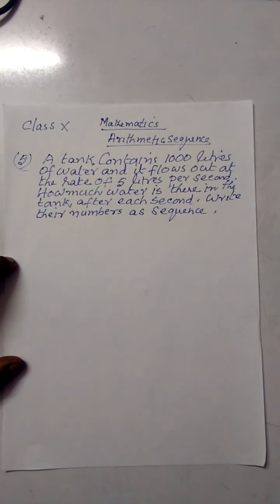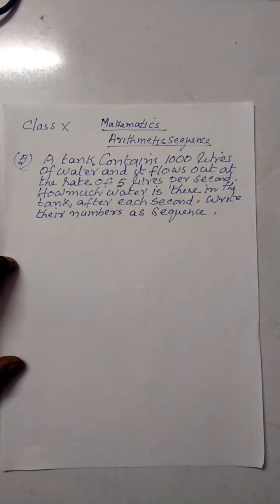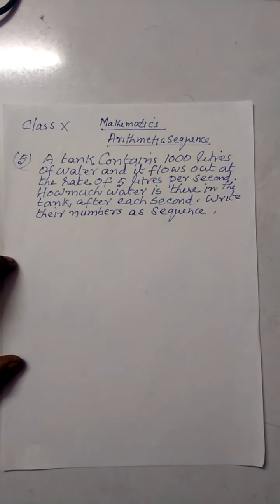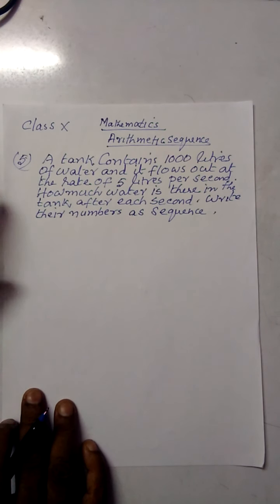Hello students, welcome to class 10 mathematics, arithmetic sequence, the fifth problem. A tank contains 1000 liters of water and it flows out at the rate of five liters per second. How much water is there in the tank after each second? Write the numbers as a sequence. This is our question.